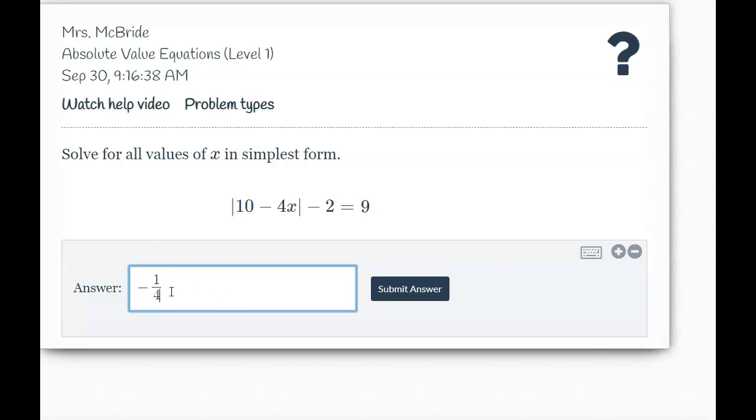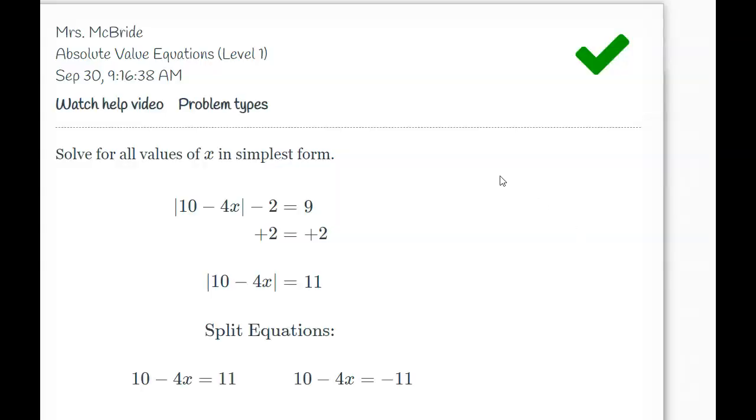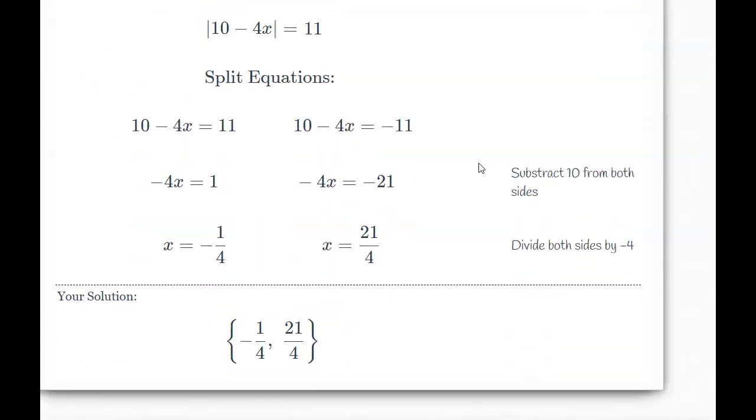So I realize now that I have two answers. In order to get two answers, we have to hit the plus sign right here, which allows me to enter a second answer. And I would enter my 21 fourths. I say yes. See that I got it correct, and my solution appears there. Hope that helps. Thank you.